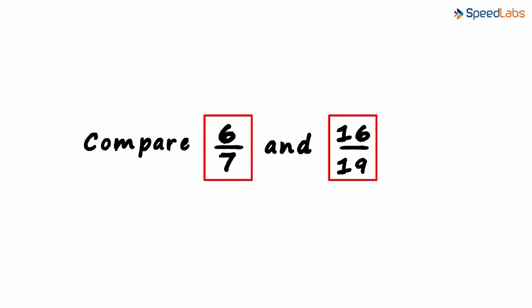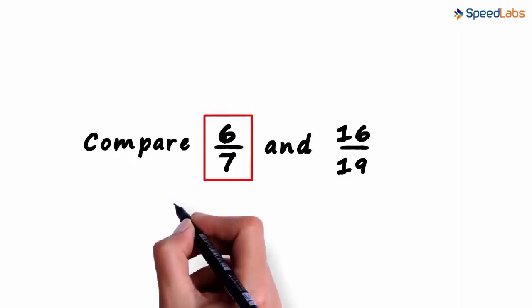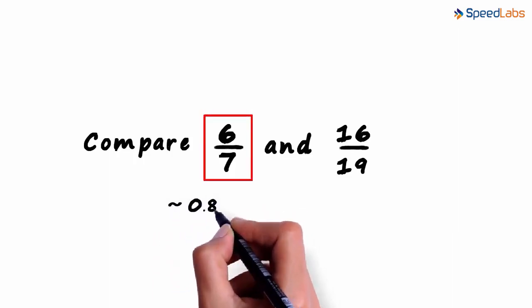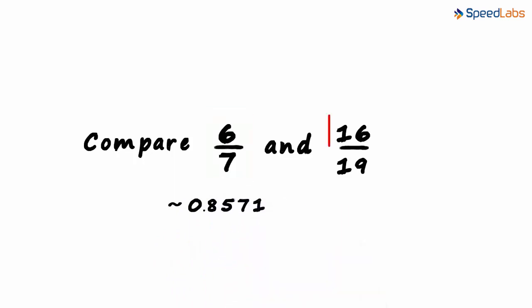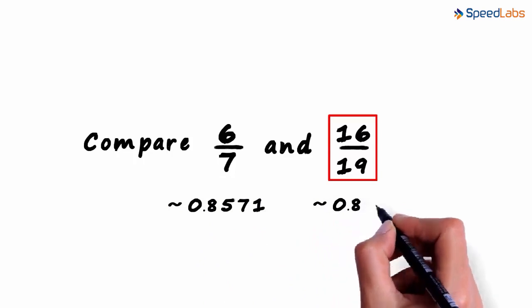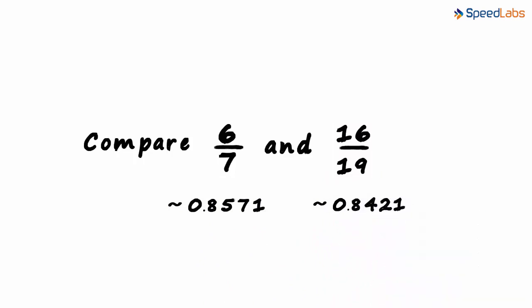Look at this example. The denominators are different. Using a calculator, we see that six by seven approximately equals 0.8571, and sixteen by nineteen approximately equals 0.8421. Pretty close I would say.